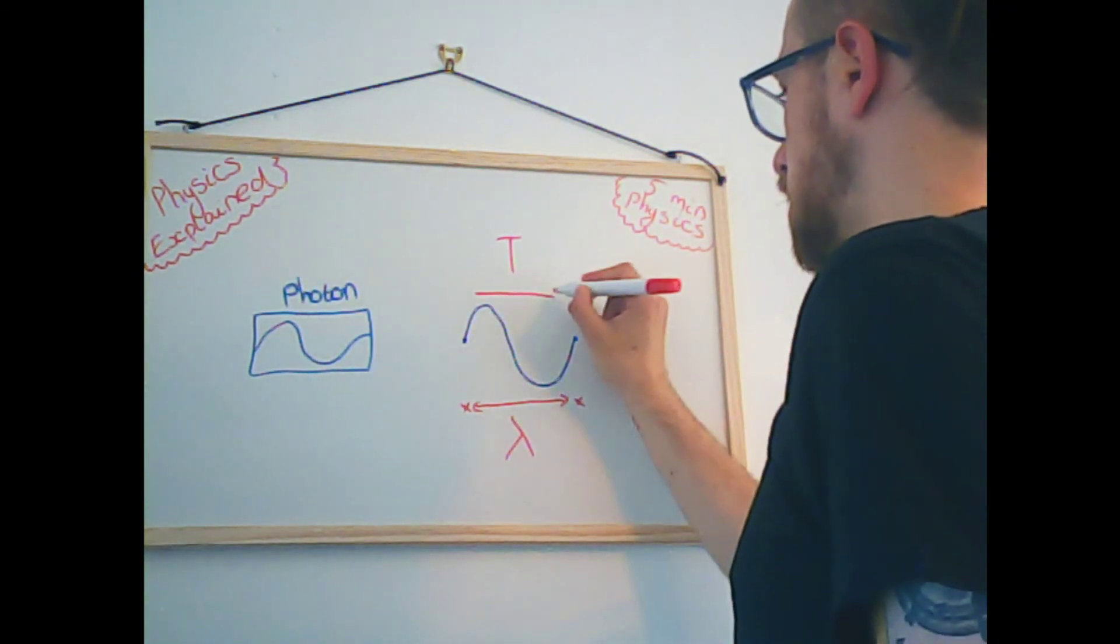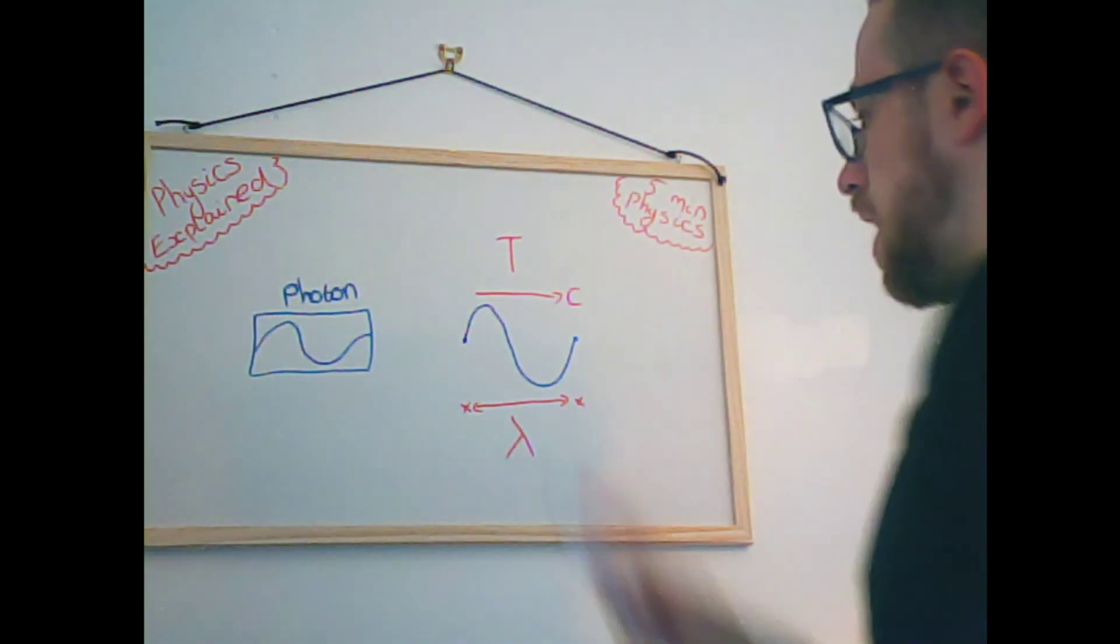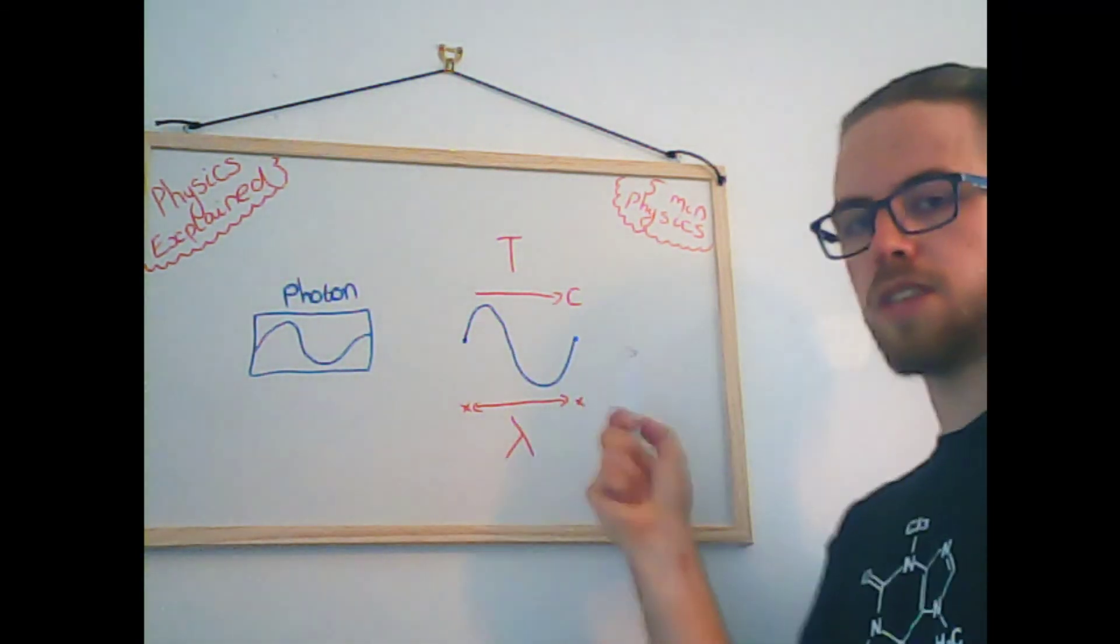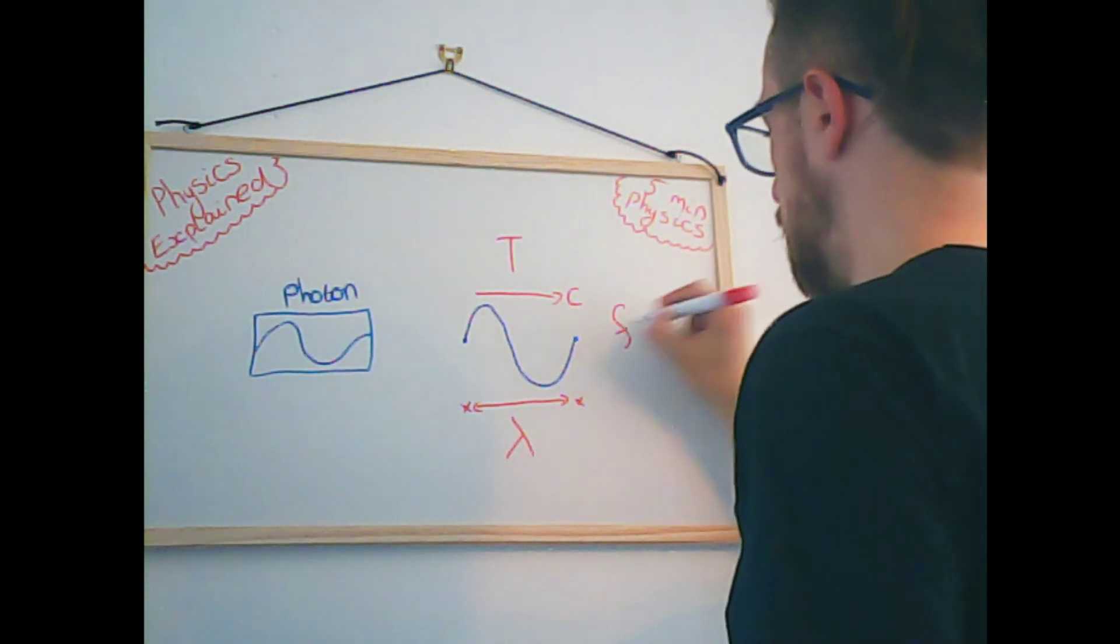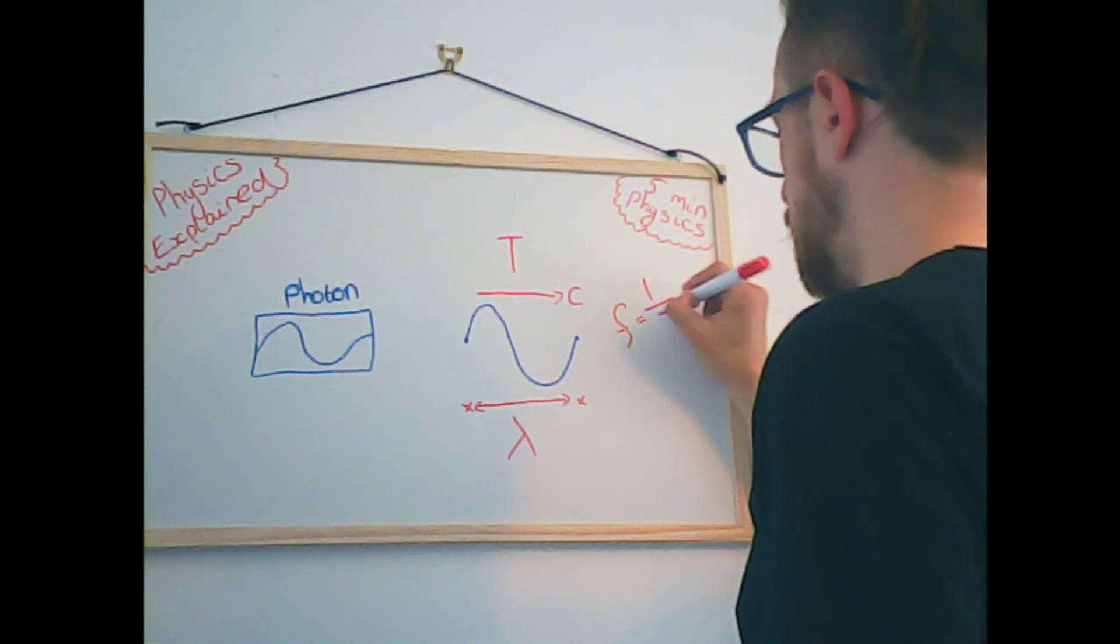And the time it takes for the wave to complete a full cycle is known as the period, we call that t. And the wave is traveling at the speed of light, c. How many waves pass this point in a second is known as a frequency. And this is proportional to the inverse of the period.